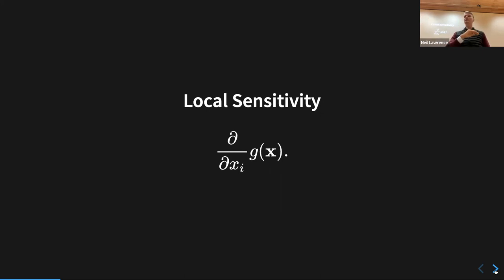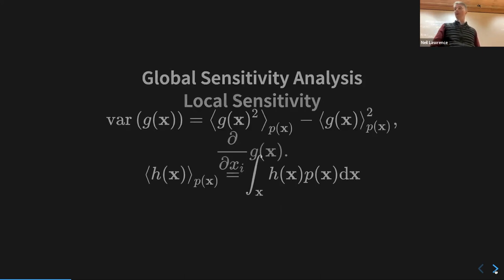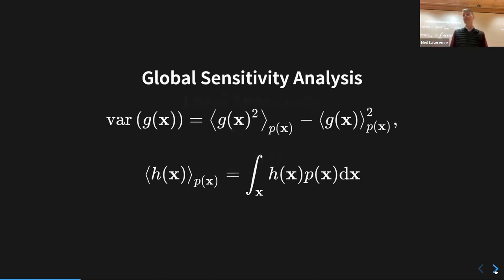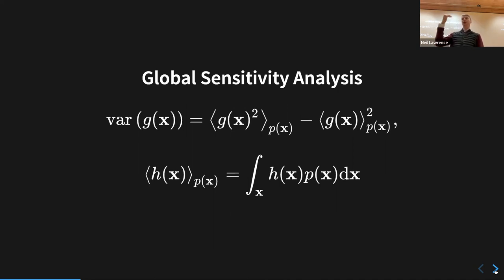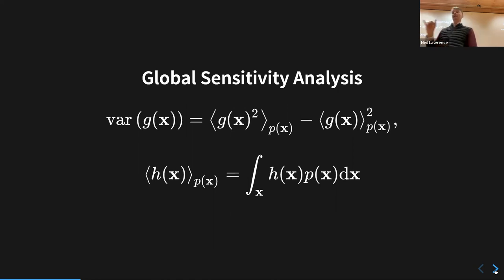In global sensitivity analysis we're looking across the range of inputs. What we're trying to do is look at the variance in the output. The user function in MU-KIT terminology — which would be the simulation — is g(x).